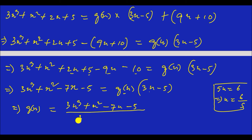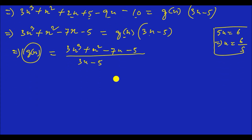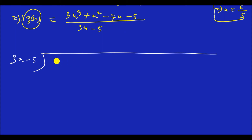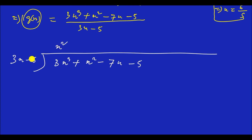Therefore GX equals (3x³ + x² − 7x − 5) divided by (3x − 5). Now we perform the long division: divide 3x³ + x² − 7x − 5 by (3x − 5).